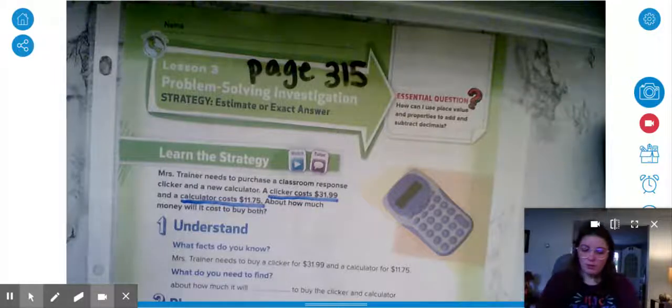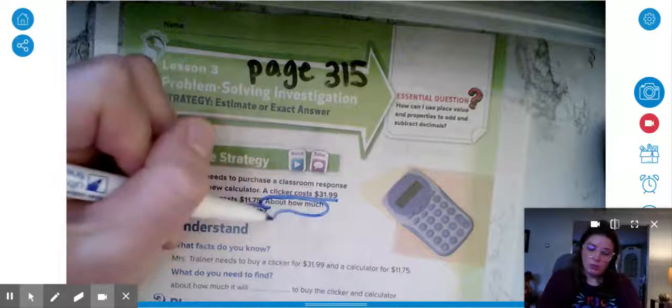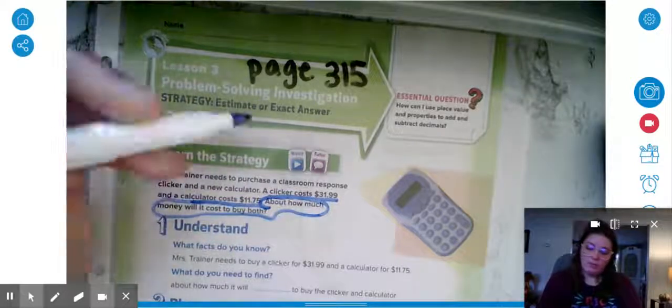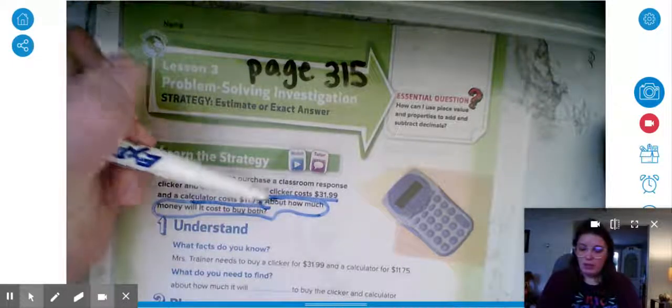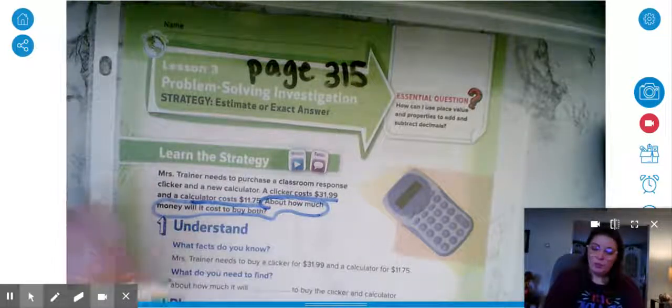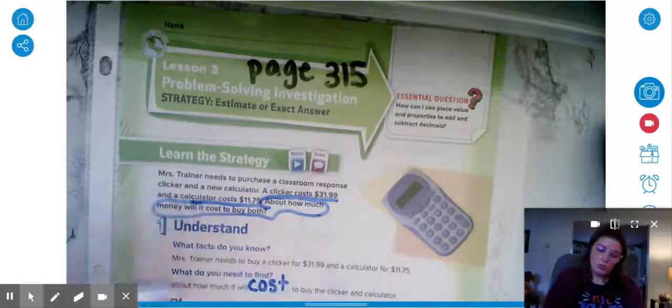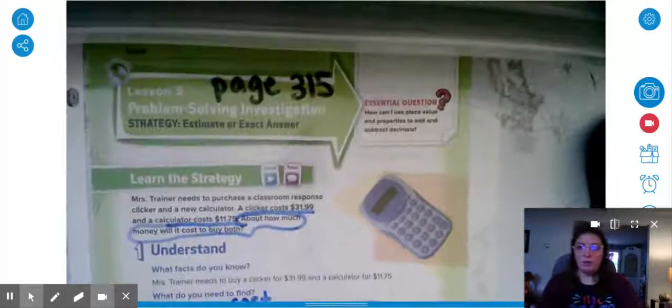So what do I need to find? That's usually the question with the sentence with the question mark. It's usually at the end but not all the time. But I need to find about how much money will it cost to buy both. So what do I need to find? About how much it will cost to buy both the clicker and the calculator.